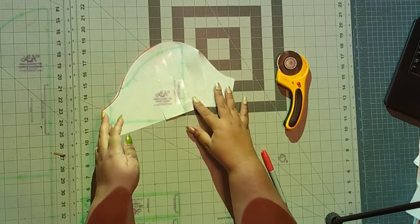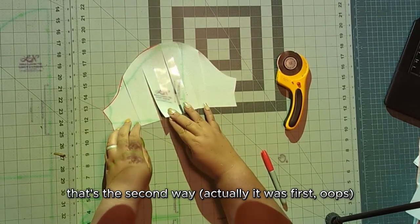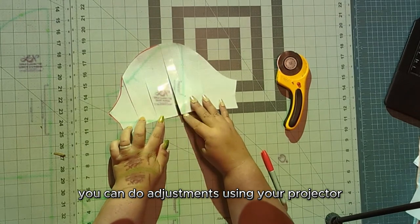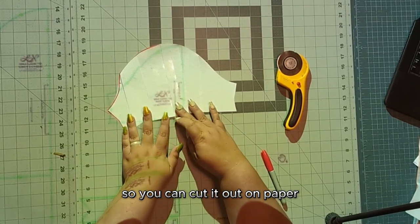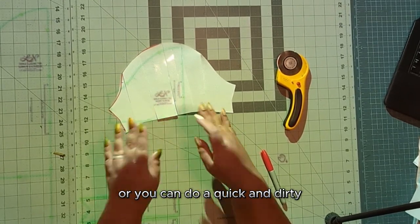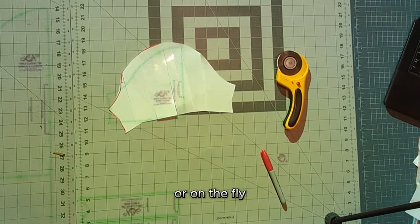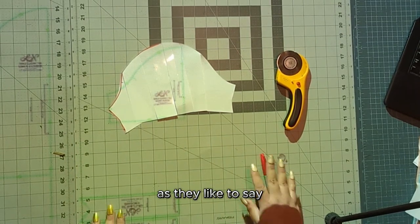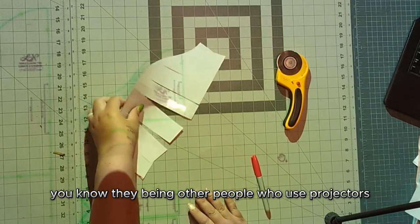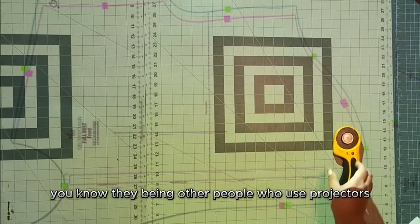I just happen to use it mostly for things that are just too dirty to cut, you know, the quick and dirty way. So yes, the quick and dirty way, that's the second way you can do adjustments using your projector. So you can cut it out on paper or you can do it quick and dirty or on the fly as they like to say, you know, they being other people who use projectors.